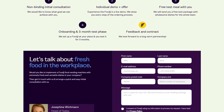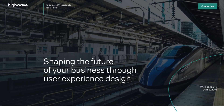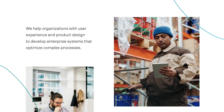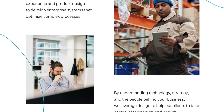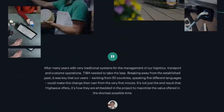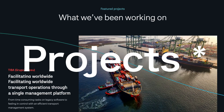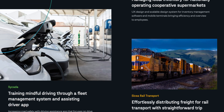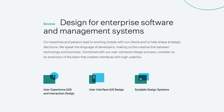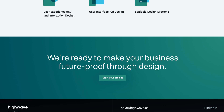Let's look at an example of the ordering on highwave.es. This is their homepage. They start off with a hero section explaining what they do in one sentence. Then they get a bit more specific about what they do. Then they have a section for their services. After the services, they have featured products. Then they have a section about what it's like working with them. A bit more about their services. And then finally, a call to action.